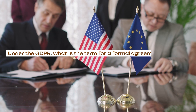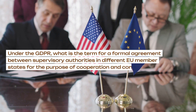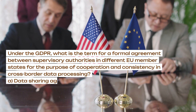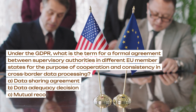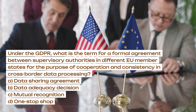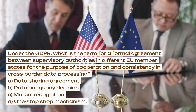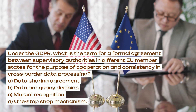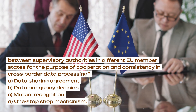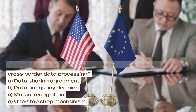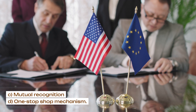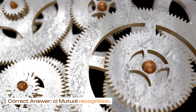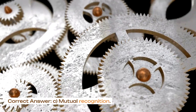Under the GDPR, what is the term for a formal agreement between supervisory authorities in different EU member states for the purpose of cooperation and consistency in cross-border data processing? A. Data sharing agreement. B. Data adequacy decision. C. Mutual recognition. D. One-stop shop mechanism. Correct answer: C. Mutual recognition.